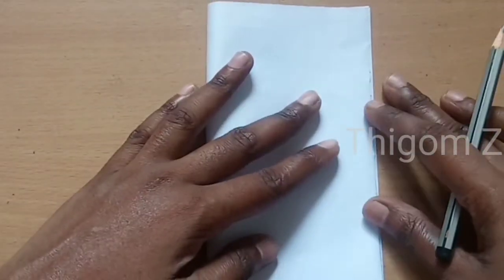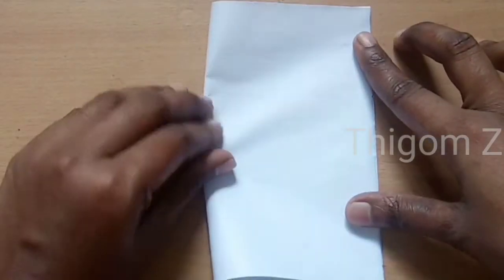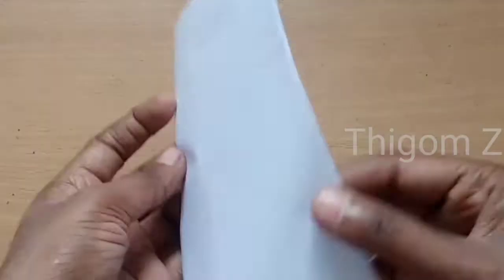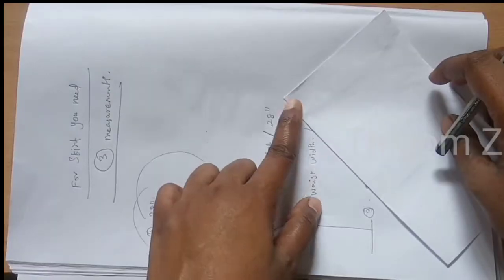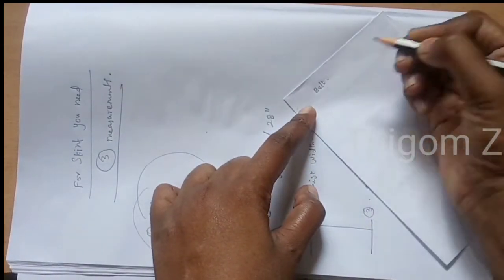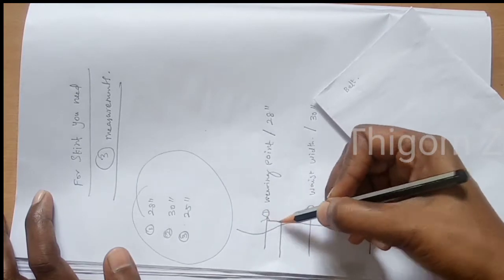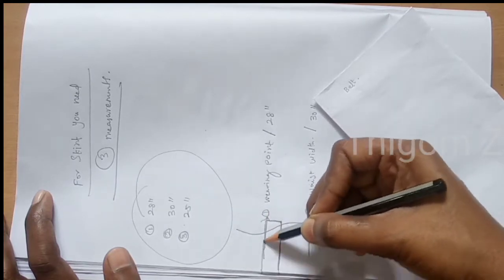Now fold the paper in half and the top of your paper would be the belt part. So I'm going to draw the belt part in the body slipper.